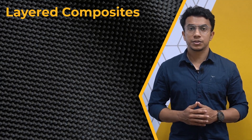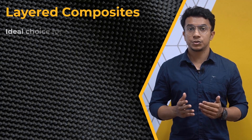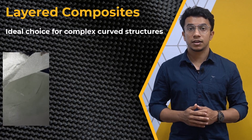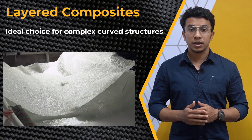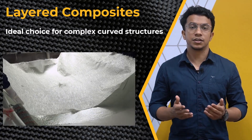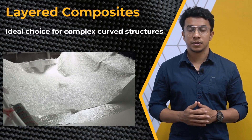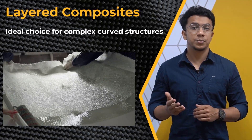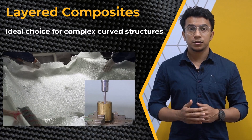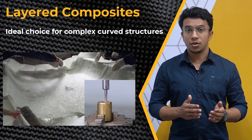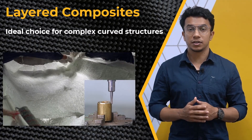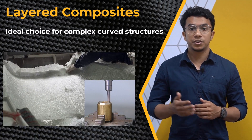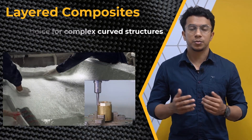Lastly, layered composites are an ideal choice for complex curved structures, as they can be formed on molds and the manufacturing process is additive. This contrasts with parts made from other materials like metals, which typically start with a block or sheet of material and require the removal of unwanted material as per design requirements.